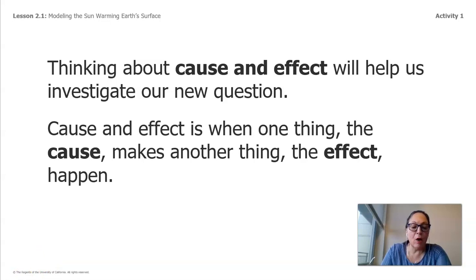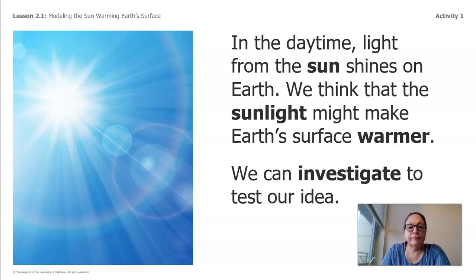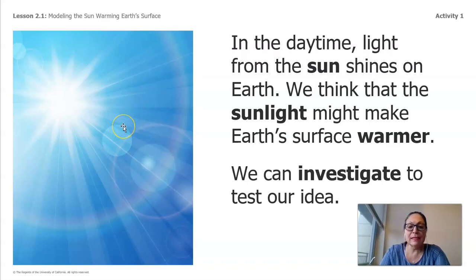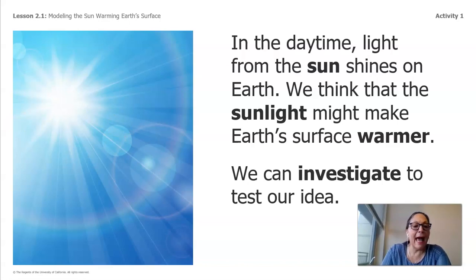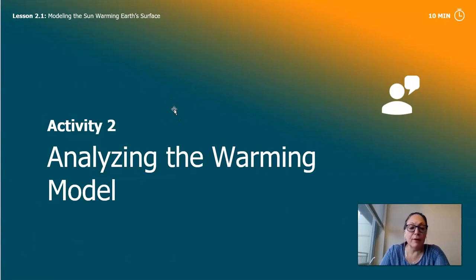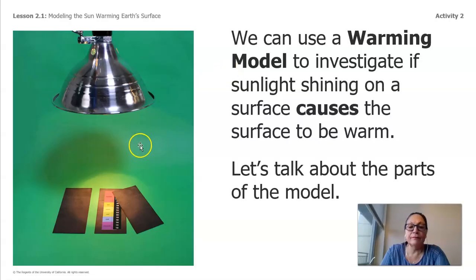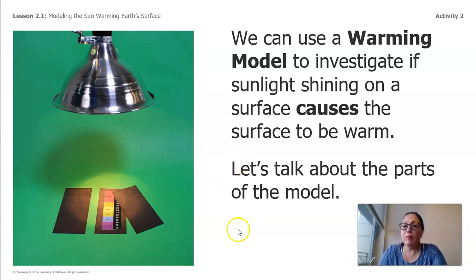We're going to take a look at a picture to help you think about cause and effect. In the daytime, light from the sun shines on Earth. We think that sunlight might make Earth's surface warmer, and we can investigate to test that idea. Here we see a picture of a bright sunny day — the brighter it is, the warmer it's going to be. So we're going to analyze the warming model.